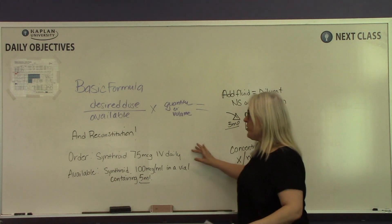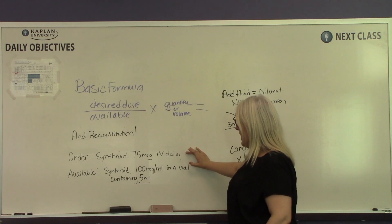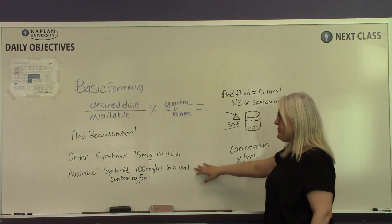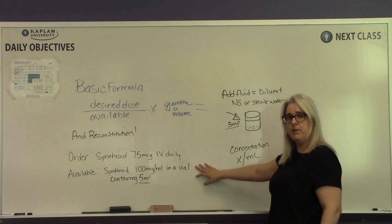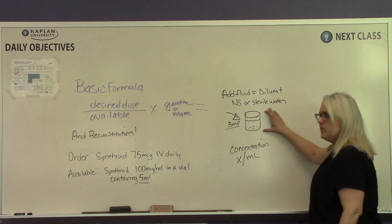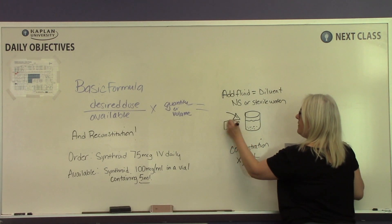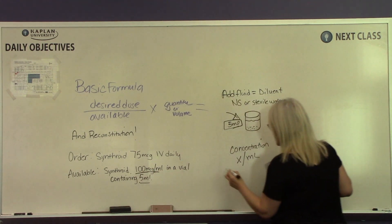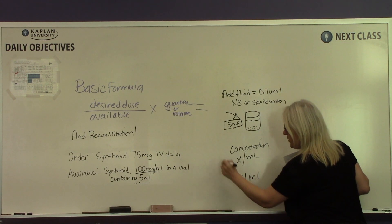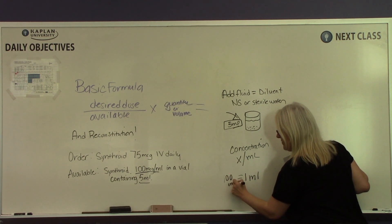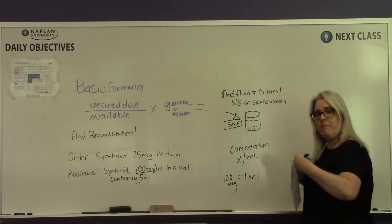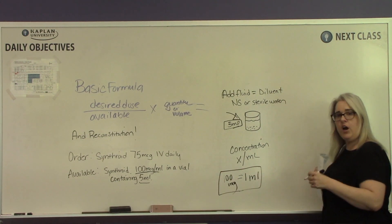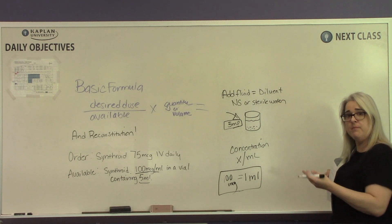For this problem, the order says Synthroid 75 micrograms IV daily. We have a vial containing Synthroid 100 micrograms per milliliter in a 5-milliliter vial. This tells us the vial contains a total of 5 milliliters of fluid, and that each milliliter equals 100 micrograms. That's the information we use to calculate how many milliliters we're going to give the patient.